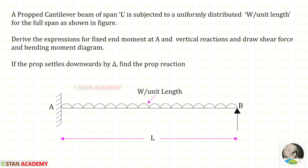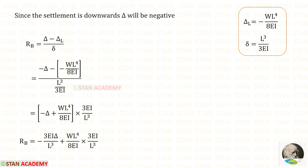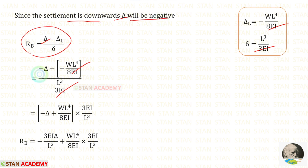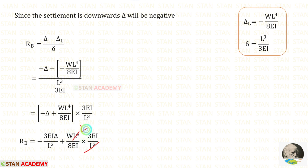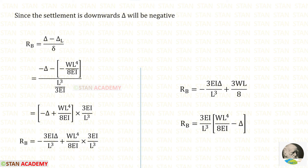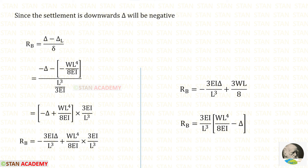We have been asked to find the prop reaction when the prop settles downwards by delta. Using the formula RB = (delta minus delta_L) / delta, and since the settlement is downward it is negative, we apply minus delta. Substituting delta_L and delta, multiplying and eliminating EI and L³: if there is settlement, the formula to find RB is minus 3EI·delta upon L³ plus 3WL upon 8. You can also factor out 3EI/L³, and the formula becomes that equivalent form.